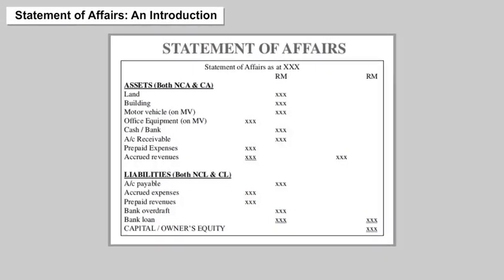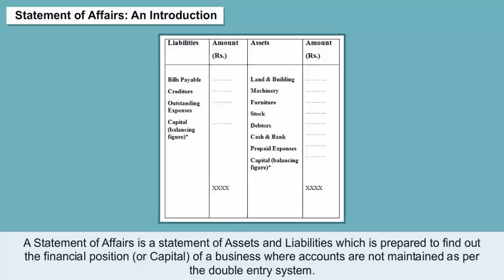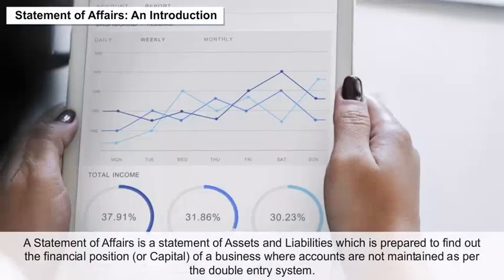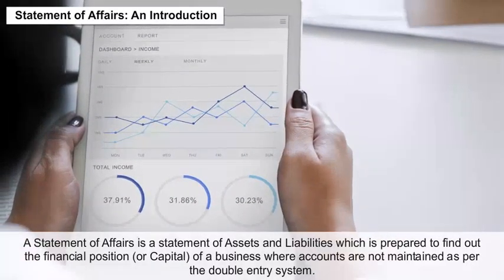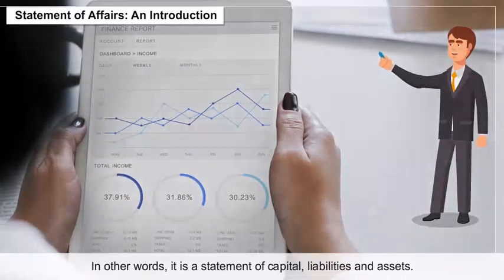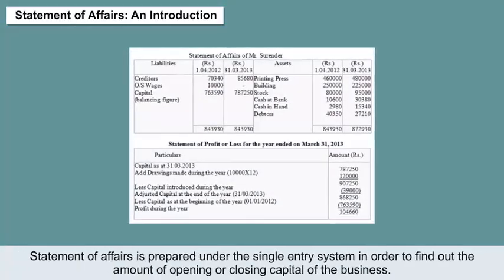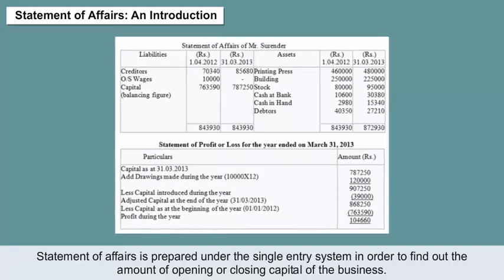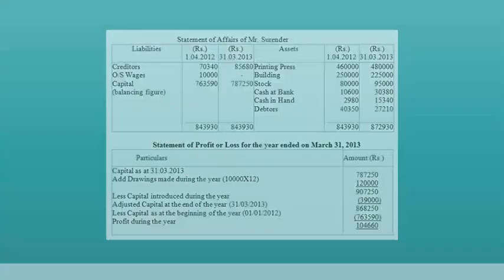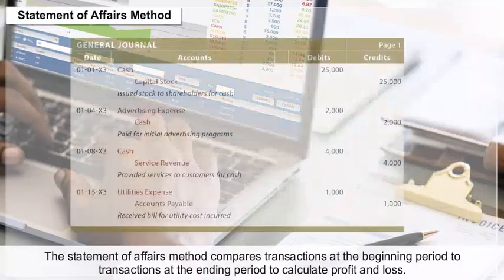Preparing Statement of Affairs: A statement of affairs is a statement of assets and liabilities which is prepared to find out the financial position or capital of a business where accounts are not maintained as per the double entry system. In other words, it is a statement of capital, liabilities, and assets. It is prepared under the single entry system in order to find out the amount of opening or closing capital of the business.